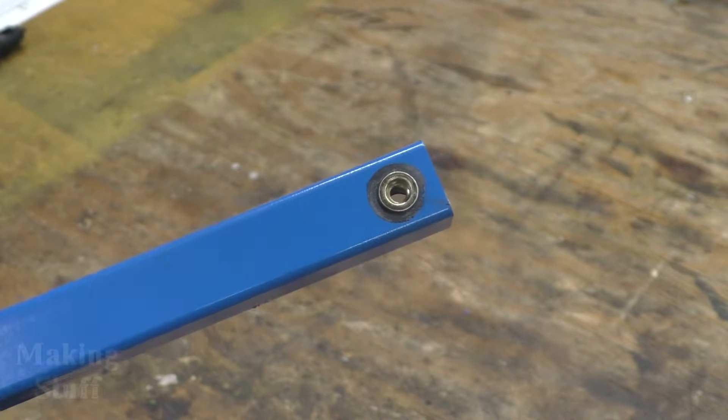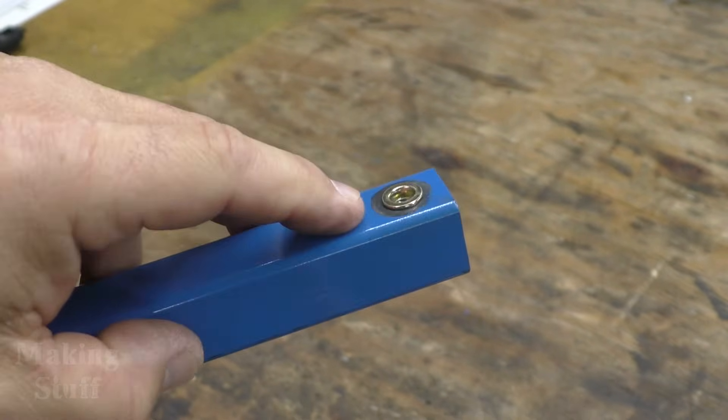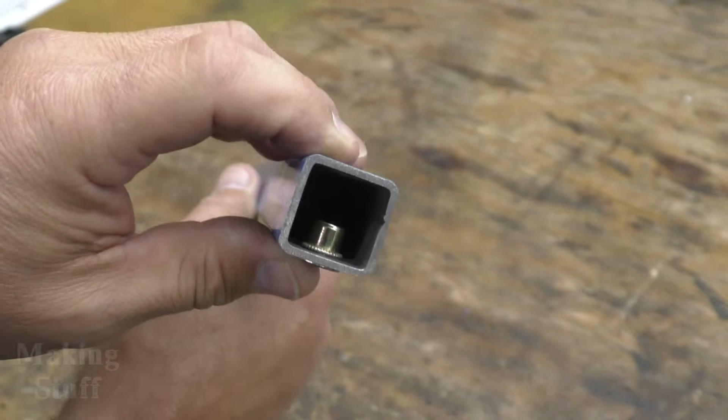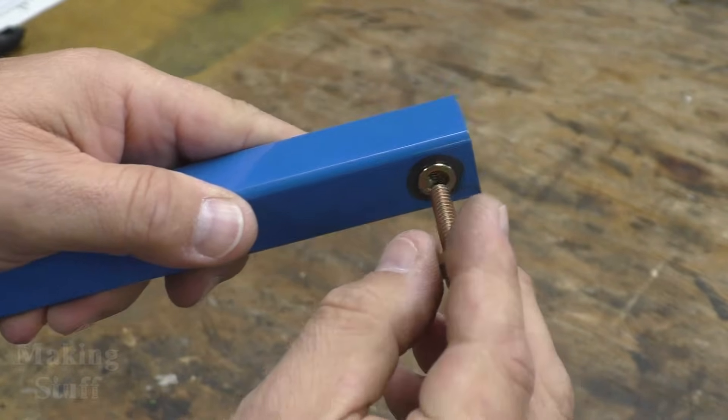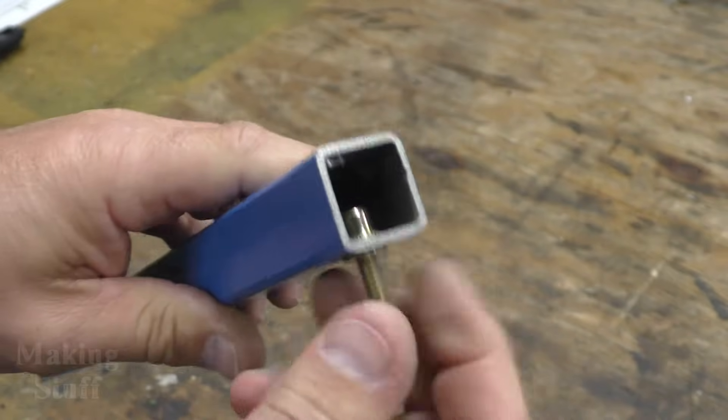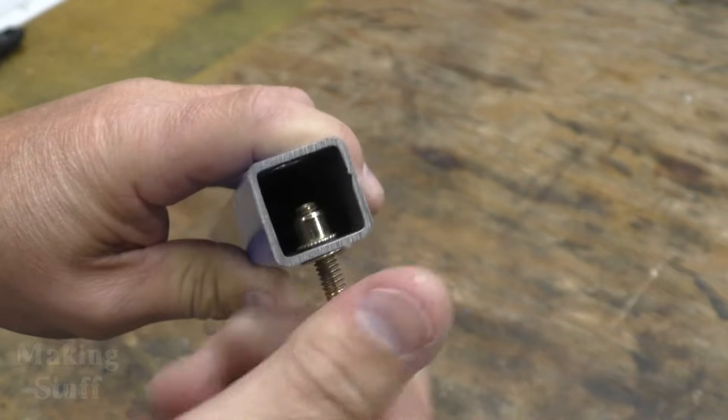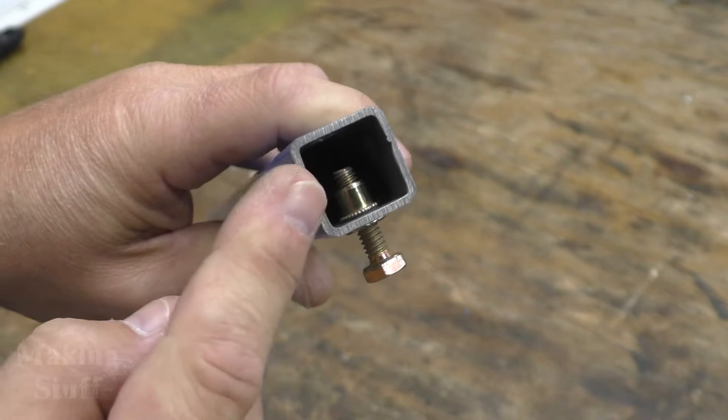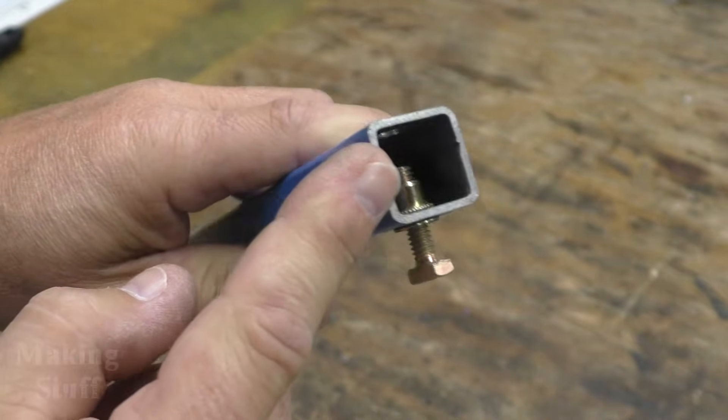So now you can see that I have got the threaded insert installed into this piece of square tubing and I have got a lot more thread to work with than what I would have had if I had just ran a tap through this thin walled square tubing.